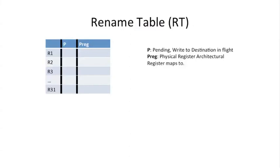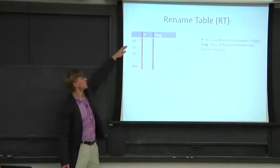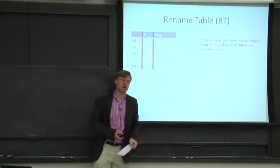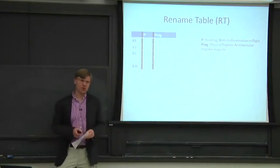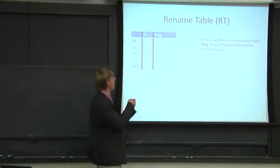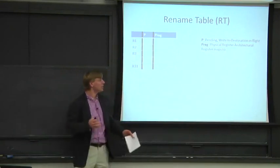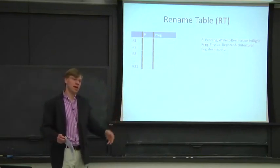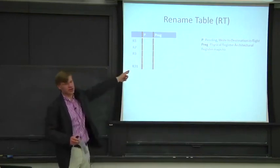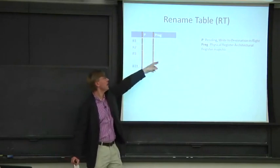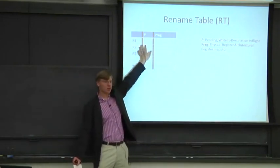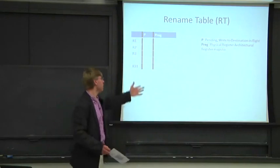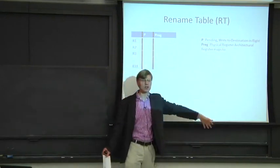Here's a quick look at the rename table. It's indexed by architectural register. The P bit tells us whether we have a write in-flight — meaning that value is not yet in the architectural register file. The Preg field tells us where in the physical register file to find the value. This is really important when a subsequent instruction looking for that value shows up — it looks here, sees it's pending, and knows it will be available in the physical register file soon. Together with the scoreboard, we might even be able to bypass it early.